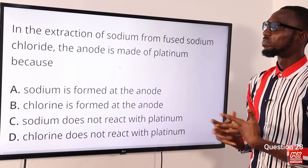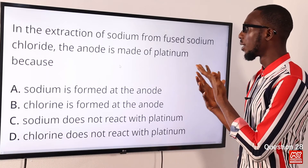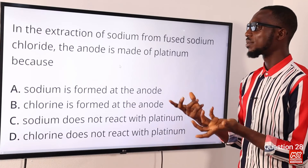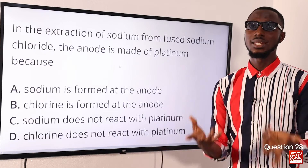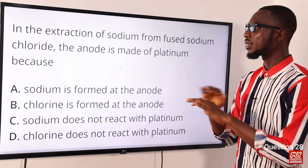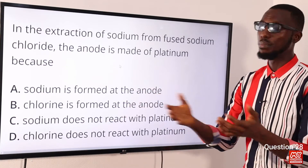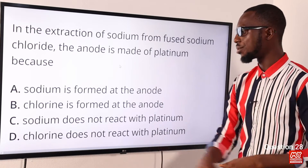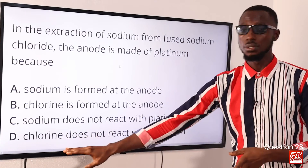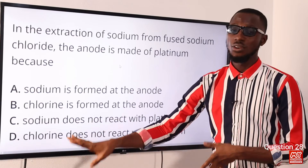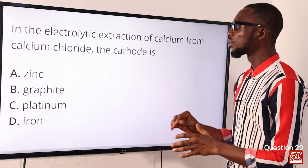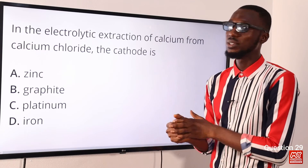Question 28: In the extraction of sodium from fused sodium chloride, the anode is made of platinum because why? Whenever carbon, graphite, or platinum is used, it is because they are inert — they do not affect the products at the electrodes and do not take part in the electrode reaction. Chlorine is produced at the anode, sodium at the cathode. The key reason for using platinum is that chlorine does not react with platinum. The correct option is option D.